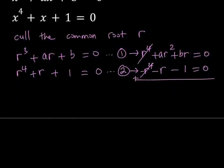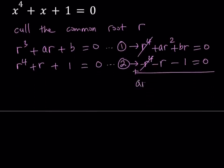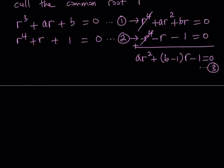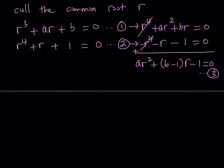R to the fourth power cancels out. Let's go ahead and arrange these terms. First, we get AR squared. Then BR minus R, which is the quantity (B minus one) multiplied by R. And then minus one equals zero. This is another equation and I'm going to call this equation number three. So now we have three equations: one, two, and three. Let's see how we can use these to find the common root R.